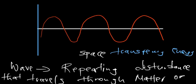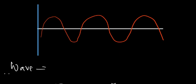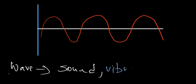A few things you can think of as waves: sound is a repeating disturbance that travels through air. When you throw a stone into a pond, you can see waves forming. You can also think of vibrations — when you drop a metal object and see that continuous vibration, that's also a wave in its own form.